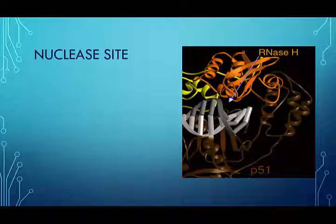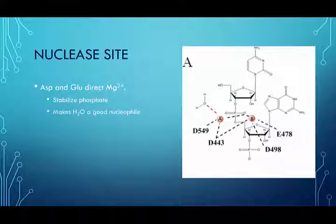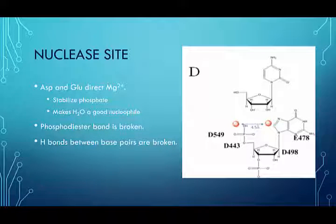At the nuclease site, the DNA-RNA complex is broken apart and the RNA is removed by a hydrolysis reaction. The nuclease site uses aspartate and glutamate residues to coordinate metal ions that do two things. First, these metal ions stabilize the negative charges of the nucleotide's phosphate groups. Secondly, they activate nearby water, making it a good nucleophile. Water can perform a nucleophilic attack, successfully cleaving the phosphodiester bond between RNA nucleotides. The hydrogen bonds between DNA-RNA base pairs are broken and the cleaved RNA leaves the enzyme. The new single-stranded DNA can then move back to the polymerase site to begin synthesis of a second strand.